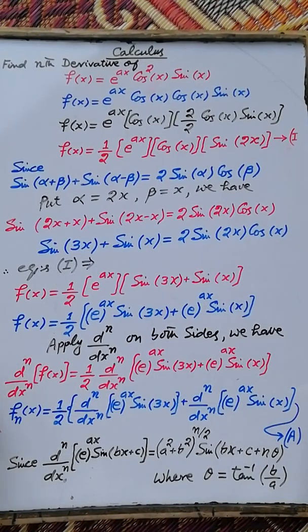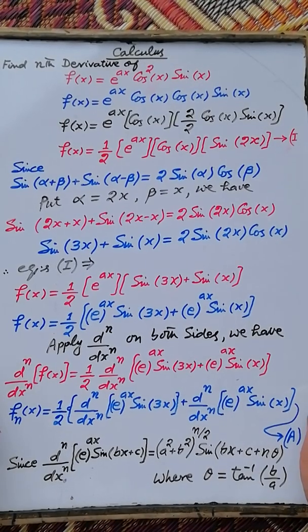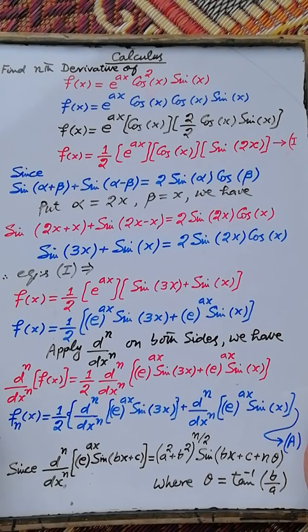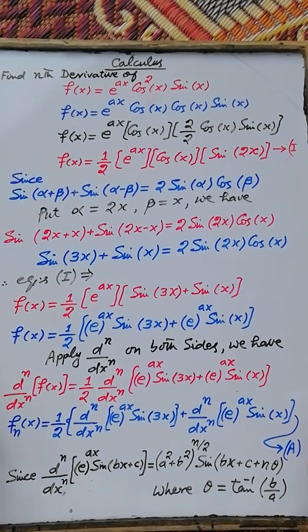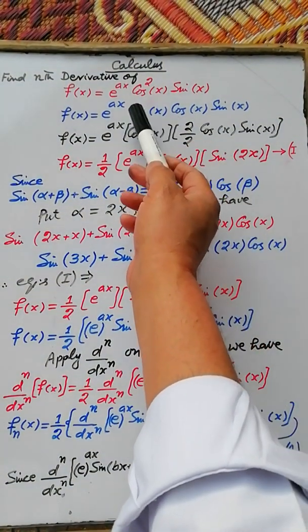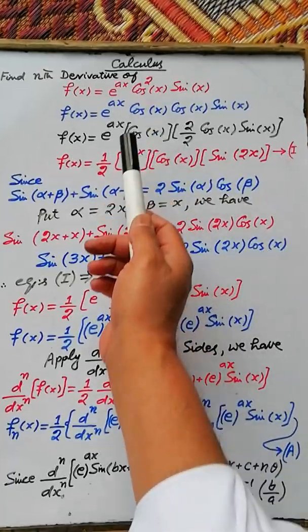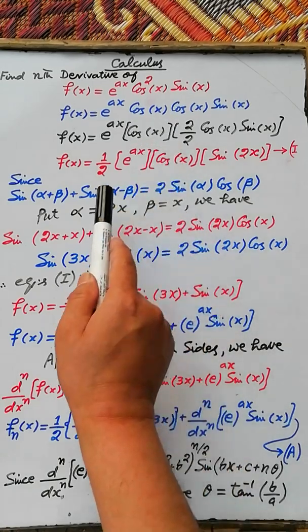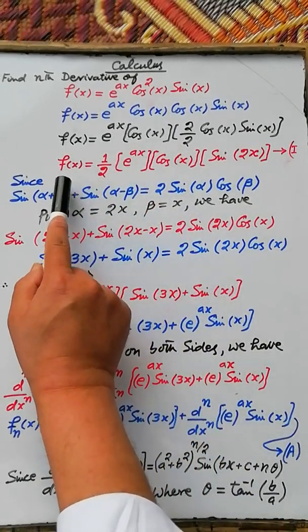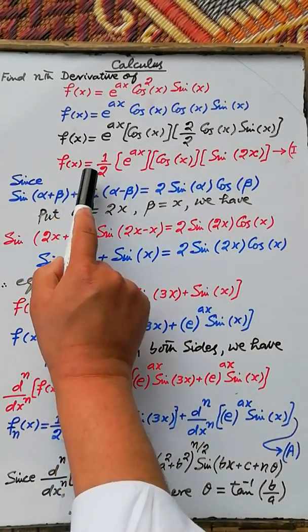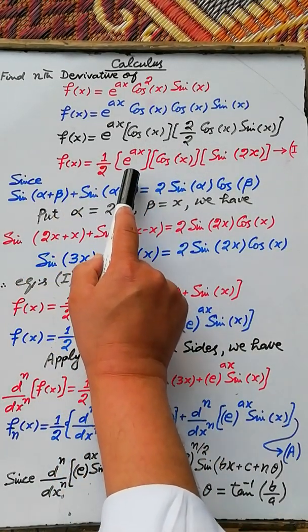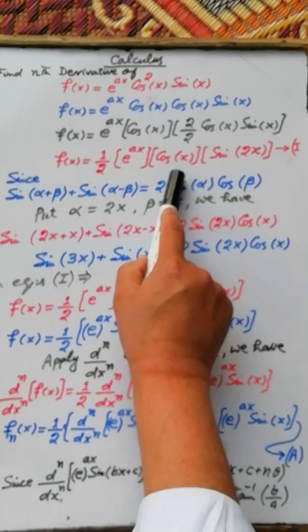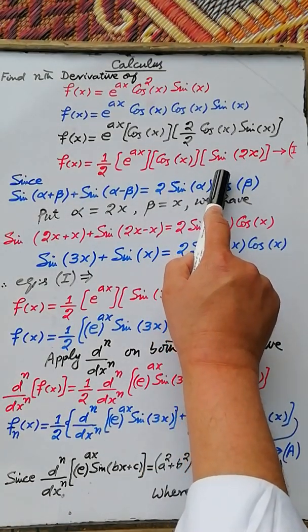Our next question is to calculate the derivative of e raise power ax times cos²(x) times sin(x). First, rearrange the given function. After rearrangement, the function f(x) is equal to one-half multiplied by e raise power ax times cos(x) times sin(2x).